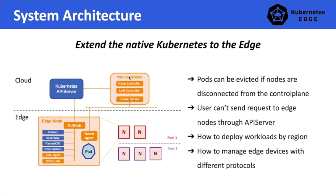So why do we need to use OpenYurt and why can we not use Kubernetes in edge computing environments directly? To answer this question, we have to understand that applying Kubernetes to the edge computing environment requires us to overcome four challenges.